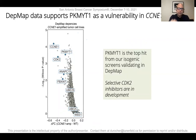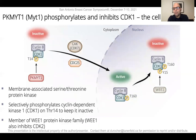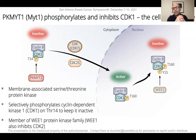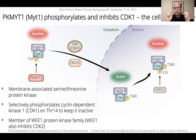PKMYT1 was also very attractive because it encodes a protein kinase — a druggable enzyme class. PKMYT1 is a protein kinase that acts as a selective inhibitor of the CDK1 kinase. In other words, PKMYT1 is a brake that prevents unscheduled CDK1 activity during the cell cycle. It is related to another kinase that is better known — the WEE1 kinase — but differs from WEE1 at a number of levels.